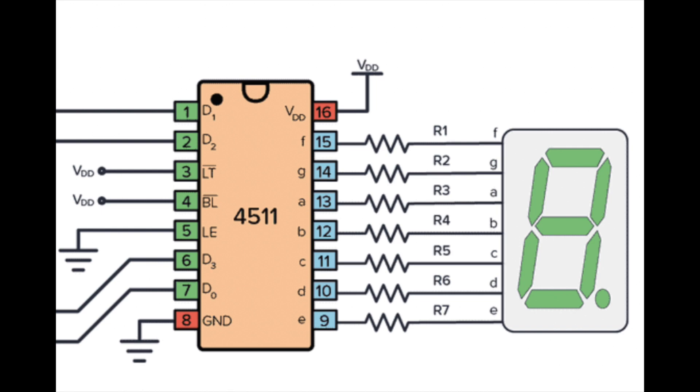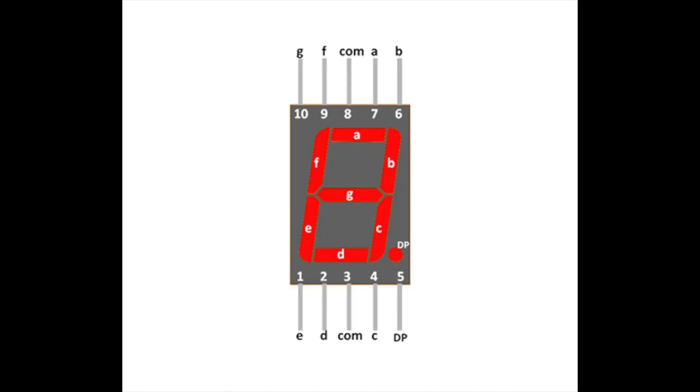Now that the BCD numbers have been decoded into their equivalent decimal values, they must be represented on the 7 segment display. These pins have the same labels as the ones on the 4511, which make wiring straightforward. Pins 3 and 8 are the common pins. Either pin must be connected to ground. Both pins don't have to be wired to ground as they're internally connected. Pin 5 is the decimal point, which is useful when there are more than one display.